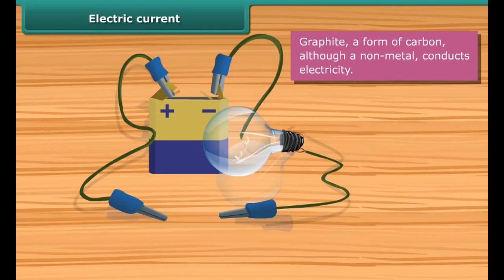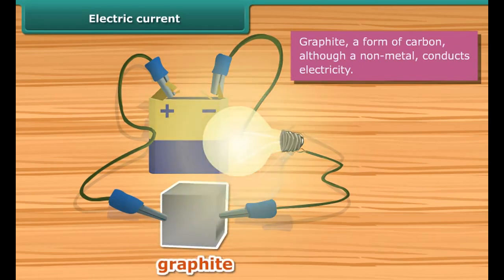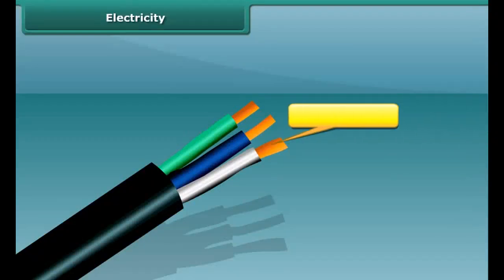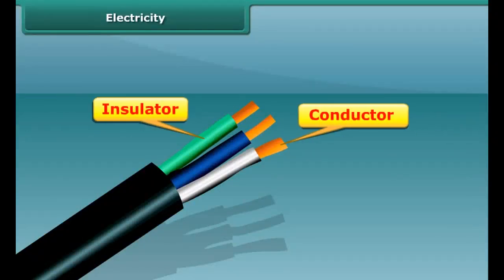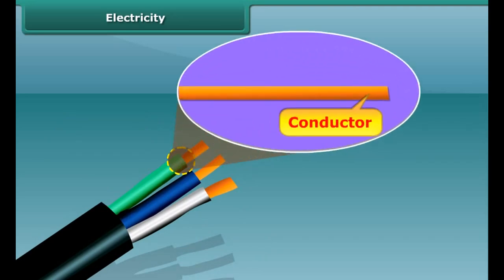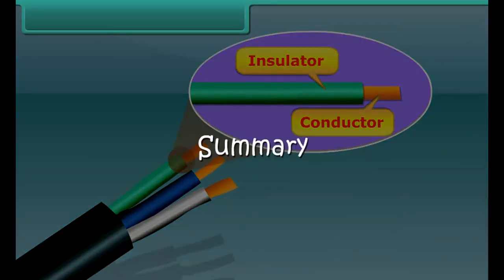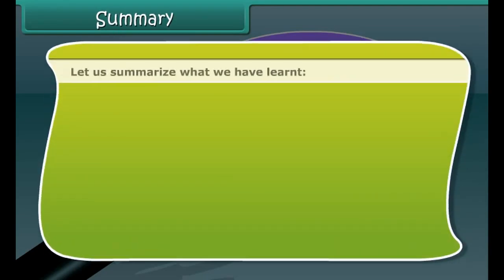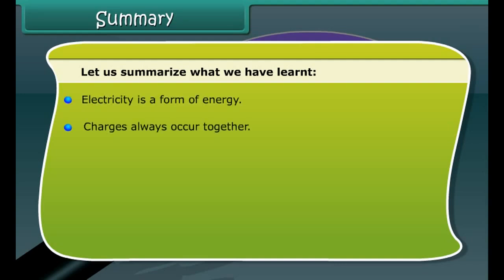It can be tested whether a given material is a conductor of electricity or not. Place the given material between the free ends of wires in an electric circuit. Bring the free ends of the two wires close. Now let them touch each other. If the bulb glows, the material is electrically conducting. Otherwise it is an insulator.